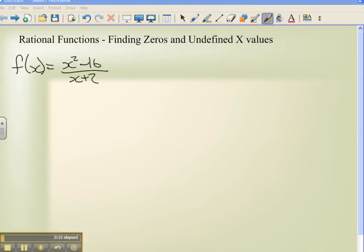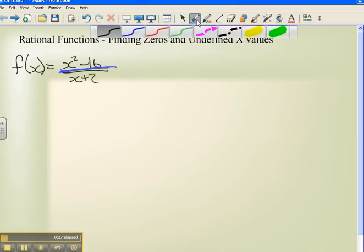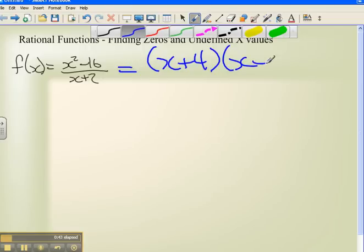Your first step should be to factor this equation as much as possible. Now if I look up here at the top, x squared minus 16 is a difference of squares. The difference of squares, a squared minus b squared, should give me a plus b times a minus b. So I factored this out all the way, I should end up with x plus 4 times x minus 4. And the bottom, well I can't factor that anymore, so I have x plus 2.